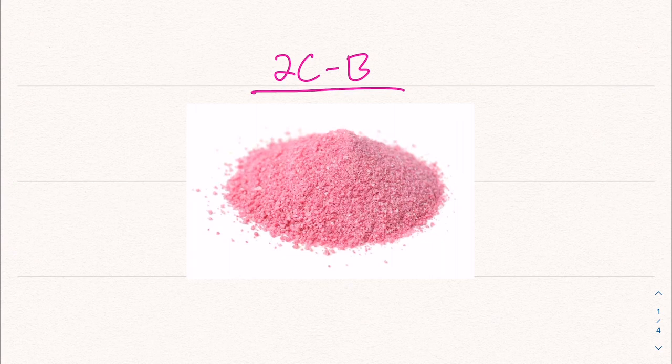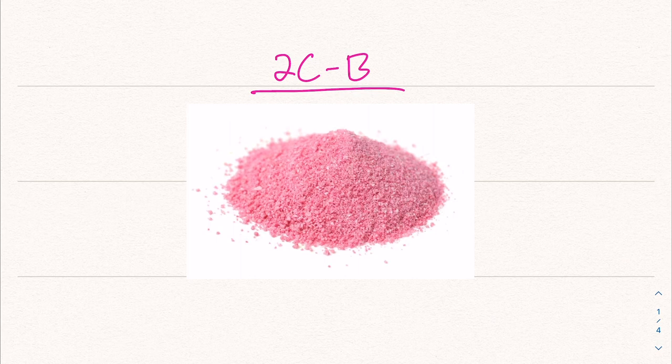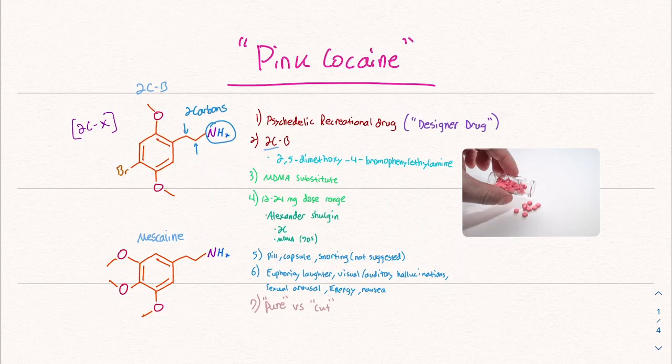Today we're going to learn about a very interesting recreational drug called 2C-B. It goes by pink cocaine and all sorts of other names. This will be the first of many videos on what are called designer drugs. Let's learn about it, how it works and what it does. So what is 2C-B? Well, this is a psychedelic recreational drug.